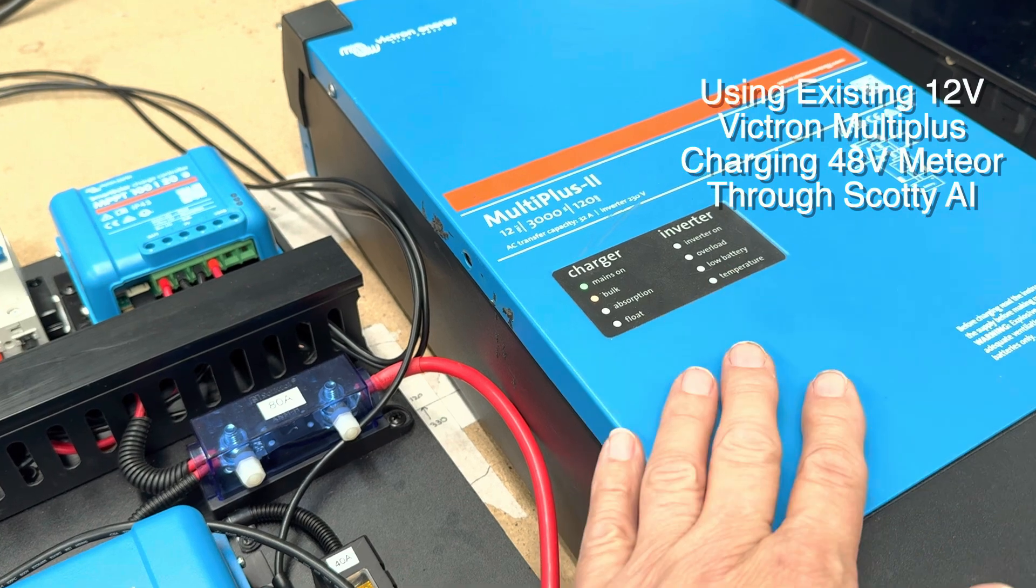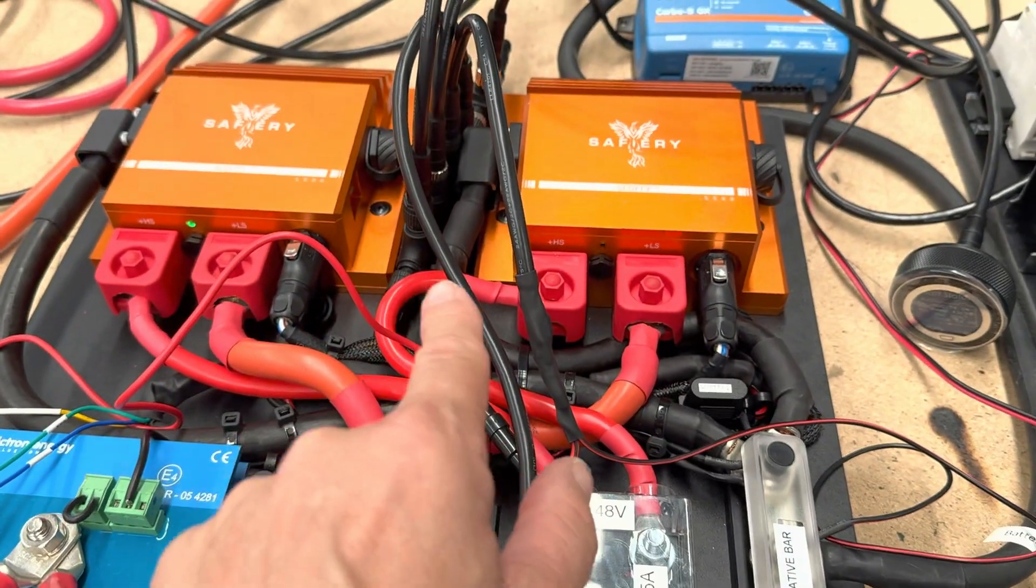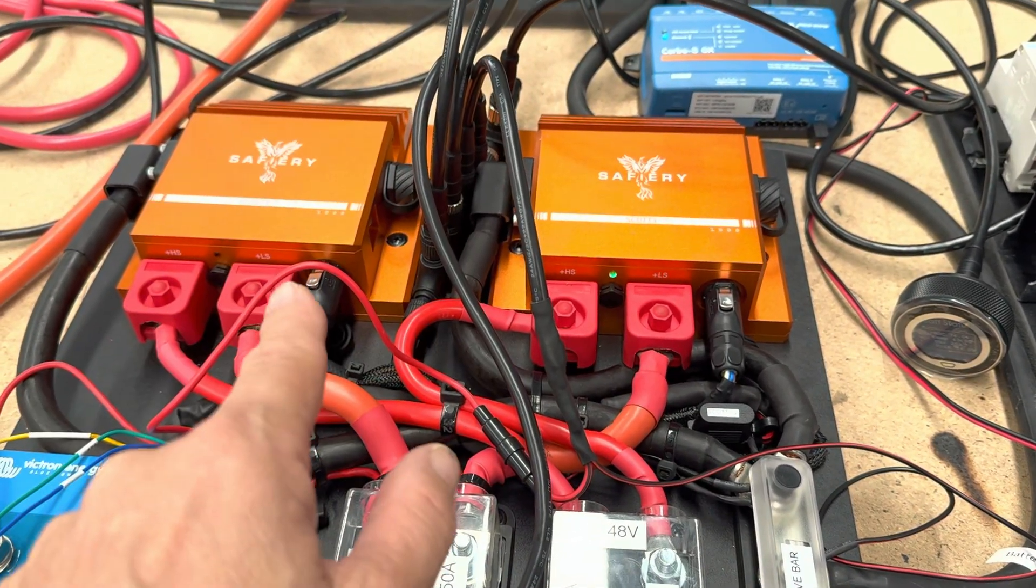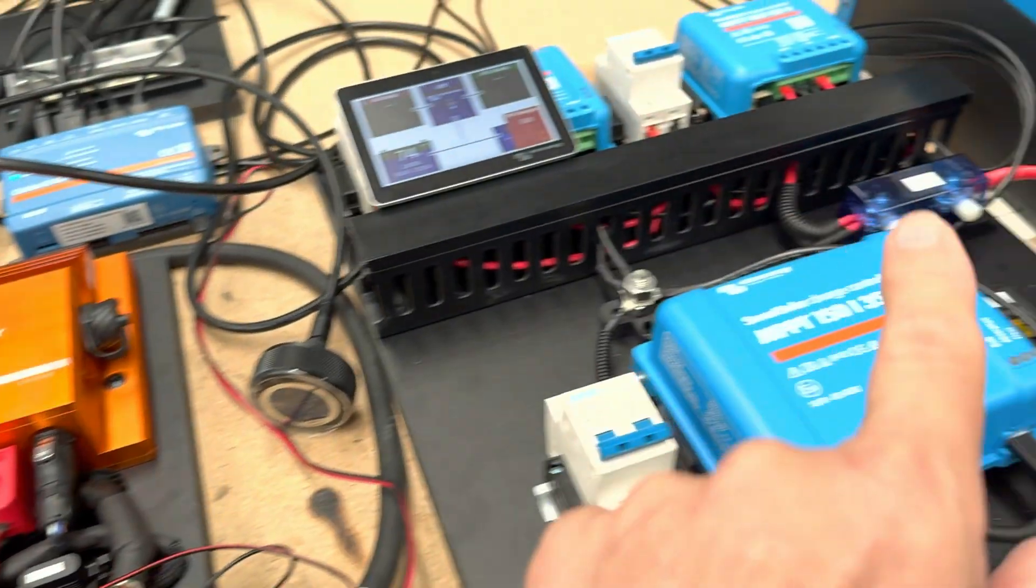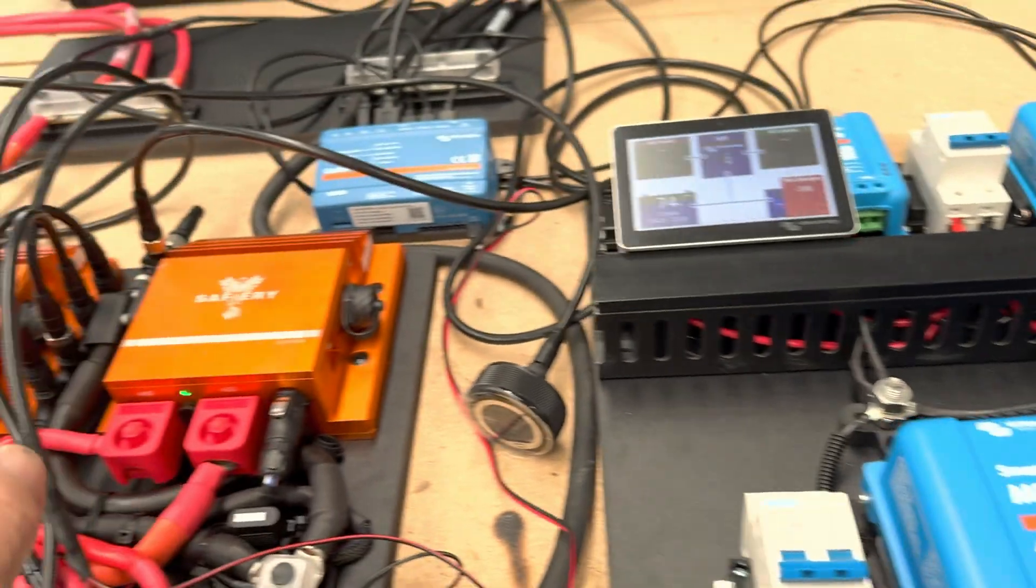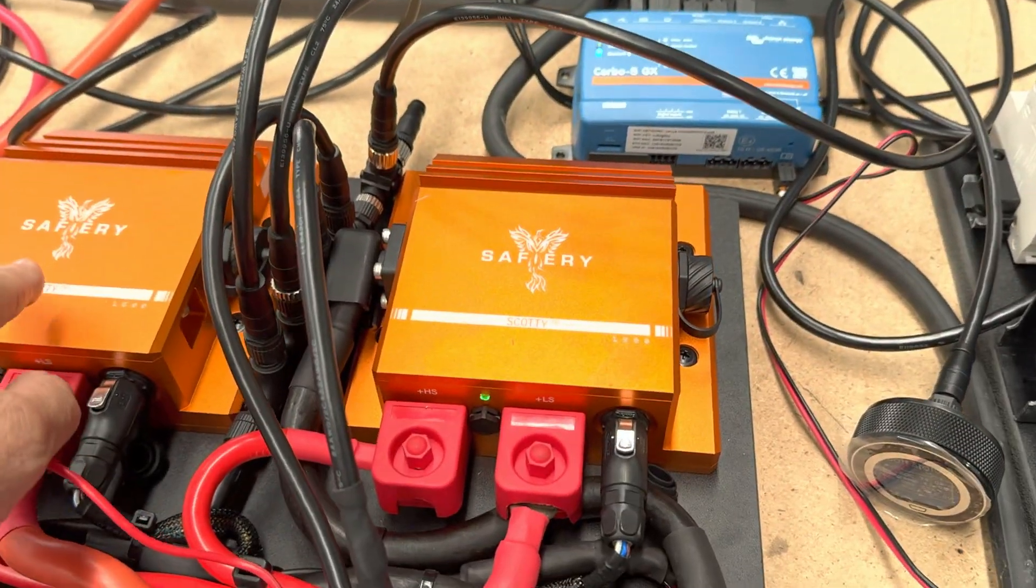So we're coming out of that on the 12 volt side and we're going into Scottie here on both the AC charging side and the alternator charging side. So when he's on shore power, this charger here is charging the 48 volt batteries through Scottie.